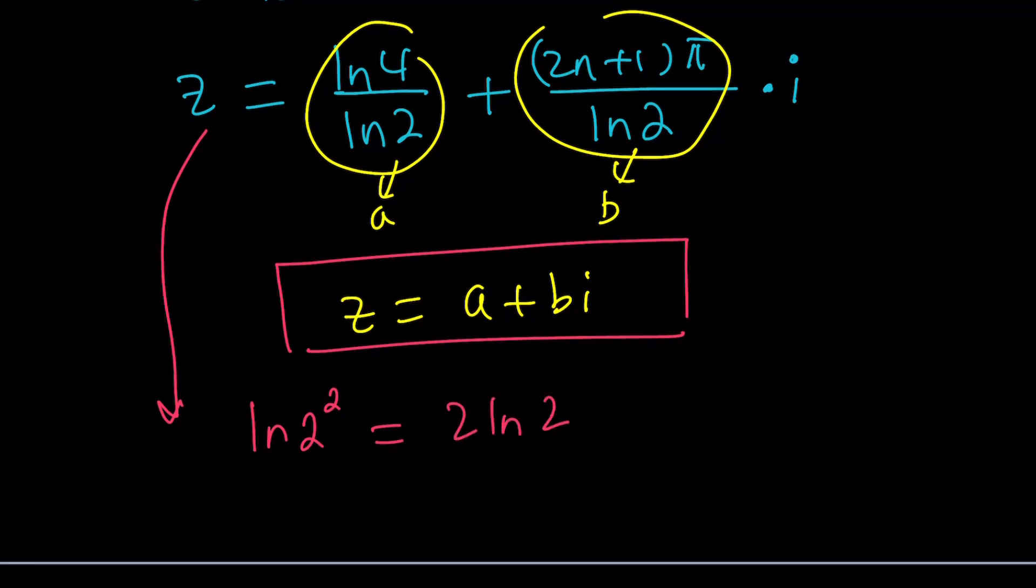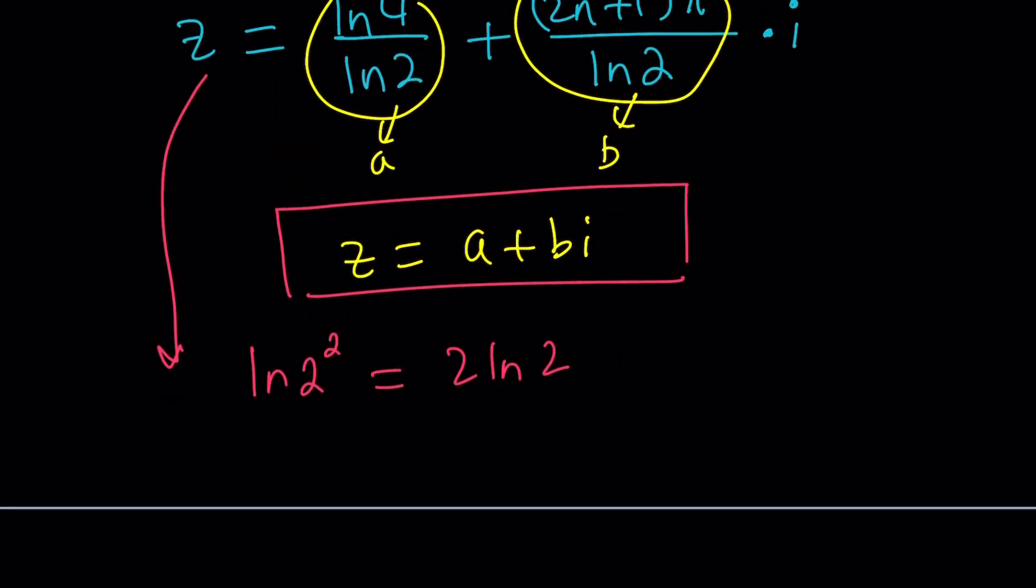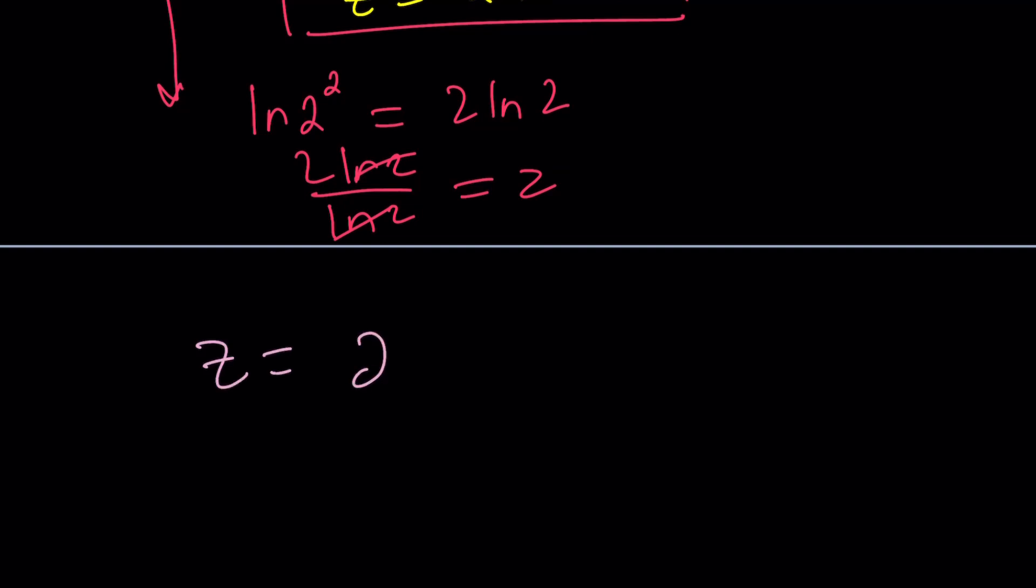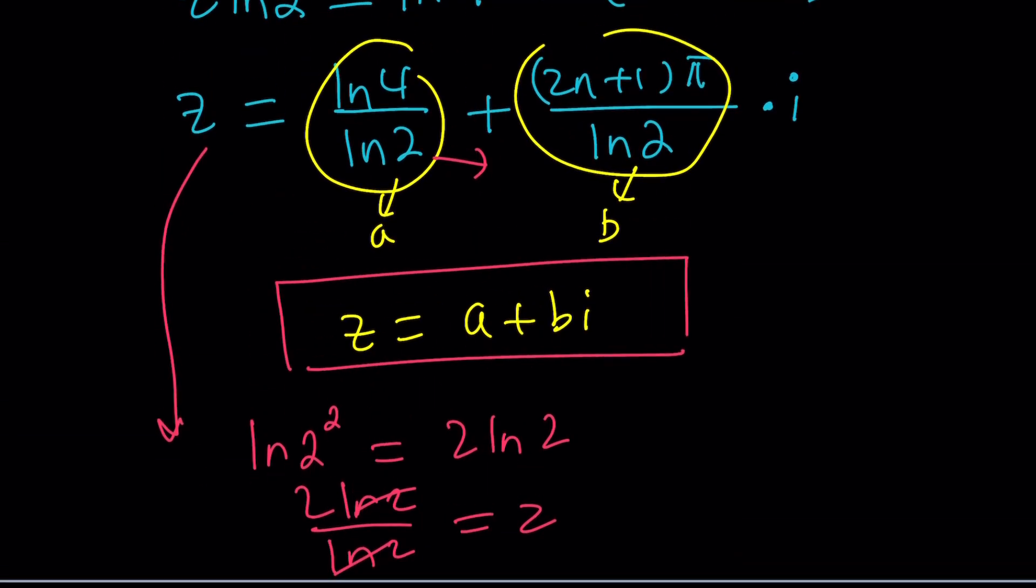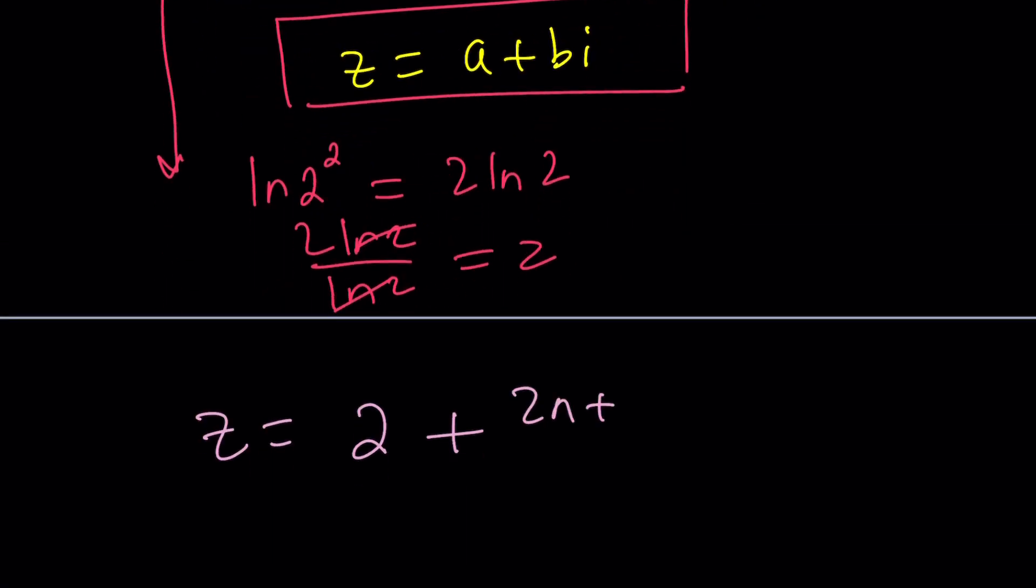So let's go ahead and simplify this though because ln 4 is ln 2 squared which can be written as 2 ln 2. So we kind of have like a cancellation. So like 2 ln 2 divided by ln 2 is just 2. So this is 2. In other words a is equal to 2. Make sense? So we're going to write this as z equals 2 plus 2 n plus 1 multiplied by pi divided by ln 2 multiplied by i.